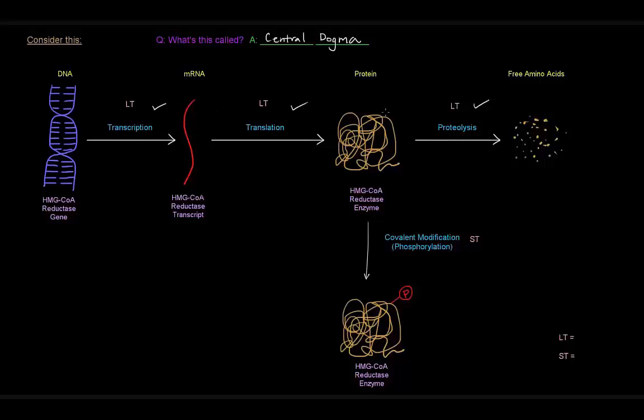And so these three things determine whether or not the protein is even available. Because if it's proteolyzed, it's just a bunch of amino acids, and how quickly and how often it's transcribed and translated to give us this protein is important as well. Now, once we actually have this protein, it can be covalently modified by phosphorylation, and that can alter the activity of the enzyme.